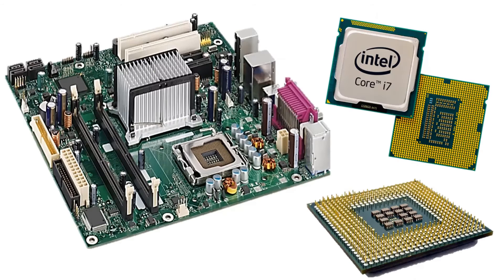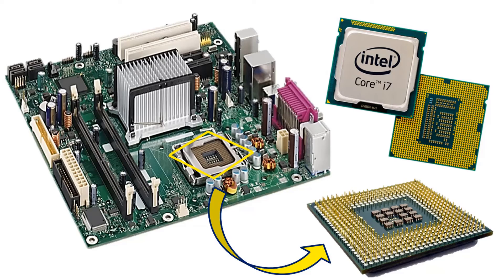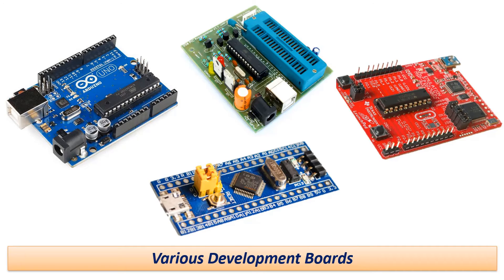The microprocessors in the computers we use today are the microchips produced with the highest technology. These processors, which are produced with today's technology, contain millions of transistors, each of which is approximately 14 nanometers in size. Instead of the modular structure of our computers, the microcontrollers we use in development boards contain all the necessary units such as the central processing unit or CPU, memory or RAM, and hard disk gathered in a single integration. Microcontroller ICs are programmable. In this way, only one job will be done. These ICs are used in relatively simpler applications. The written program is saved in the microcontroller program memory and runs continuously when the IC is energized. Companies such as Atmel, PIC, and Texas Instruments produce very different kinds of microcontroller ICs.